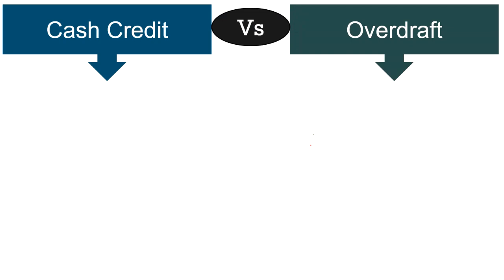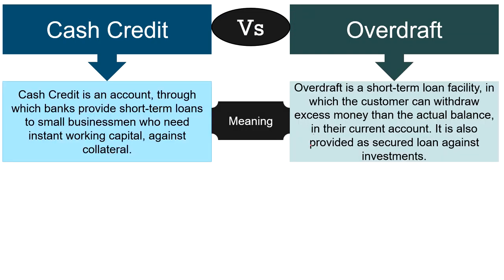Moving on to the differences: in terms of meaning, Cash Credit is an account through which banks provide short term loans to small businessmen who need instant working capital against collateral. On the other hand, Overdraft is a short term loan facility in which the customer can withdraw excess money than the actual balance in their current account. It is also provided as a secured loan against investments.